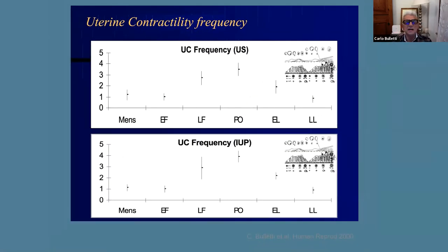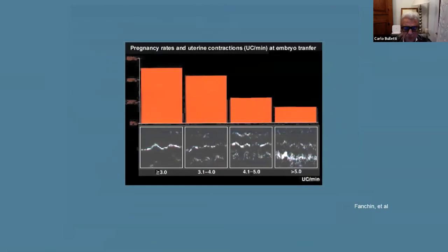Here is the frequency of contraction of the uterus during the menstrual cycle. You can see the frequency of uterine contraction detected by ultrasound and by measuring intrauterine pressure. We have the highest number of contractions at the peri-ovulatory time, and we decrease this contraction during the luteal phase according to progesterone production. According to the old paper of Renato Fenschen, we have a reduction in implantation rate as the number of contractions per minute increases. So this is a negative correlation between contraction and implantation.